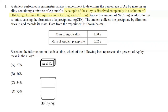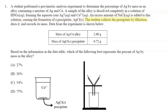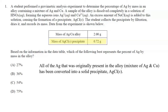The alloy is dissolved in nitric acid forming the aqueous ions Ag+ and Cu2+, and then an excess amount of aqueous sodium chloride is added to the solution, causing the formation of a precipitate AgCl — solid silver chloride. The student collects the precipitate by filtration, dries it, and records its mass. The mass of the AgCl precipitate is 0.72 grams.